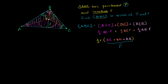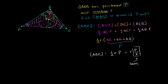So the area of triangle ABC equals one-half times R times the perimeter P — which is a neat result. This can also be written as R times P over 2. The term P over 2 is called the semi-perimeter, sometimes denoted S. So you'll also see the area written as R times S, where S is the semi-perimeter.